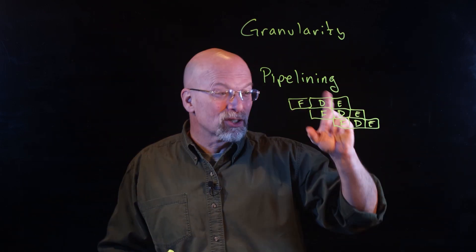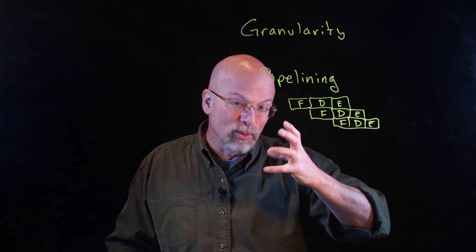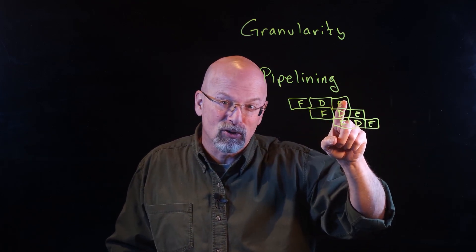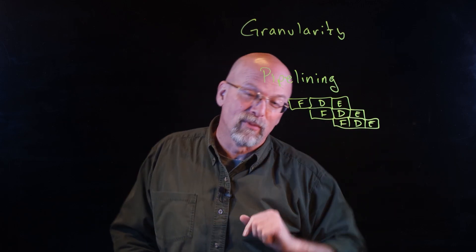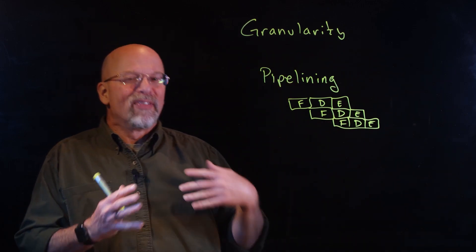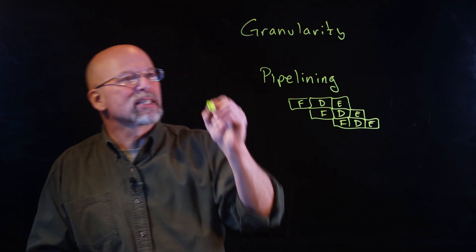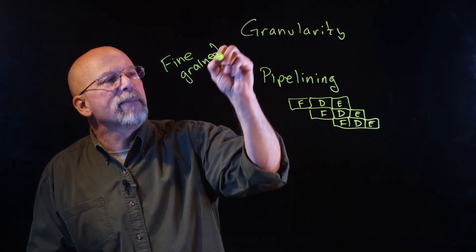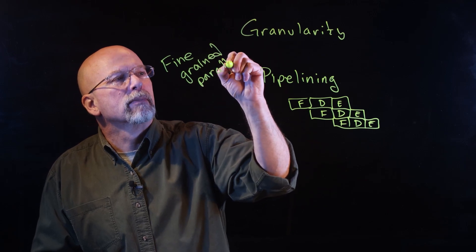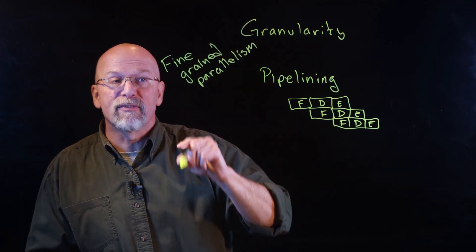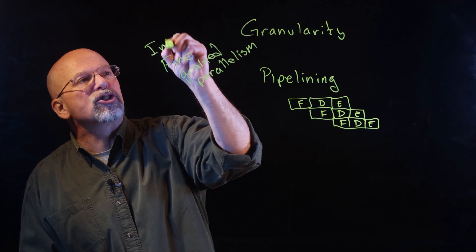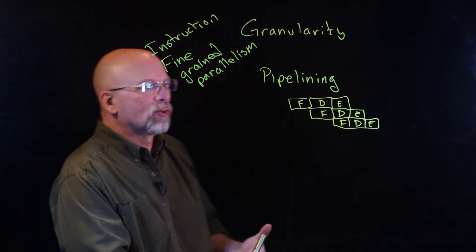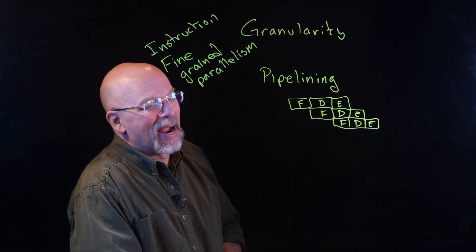Really what the processor, what the CPU is doing, is three things at one time. It's executing instruction one, decoding instruction two, and fetching instruction three. That's in parallel. This is something we would refer to as fine-grained parallelism. Specifically, instruction fine-grained parallelism.